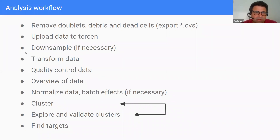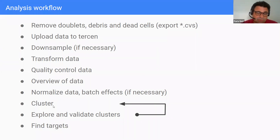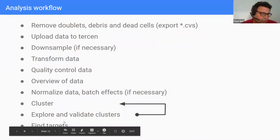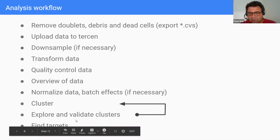The analysis workflow starts by removing doublets, debris, and dead cells — this can be done with Kaluza, FlowJo, or Venturi One from Discovery Suite. You export to CSV, upload to Tersen, downsample if necessary, transform your data, quality control, overview your data, and normalize for batch effects if needed. Sometimes the statistical technique will handle systematic effects if the experimental design is well balanced. Then comes clustering, where you split populations into groups, explore and validate them, and find biomarker targets.